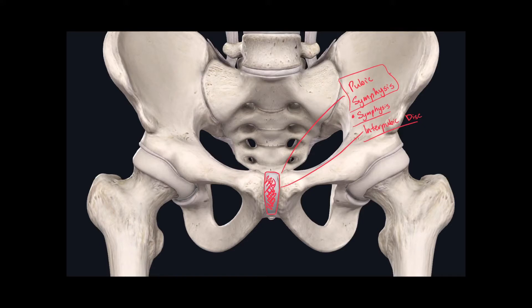The next joint that we need to identify is located right here between the auricular surface of the ilium and the auricular surface of the bony sacrum. This joint is called the sacroiliac joint. It's classified as a planar joint.